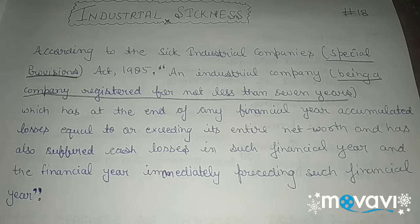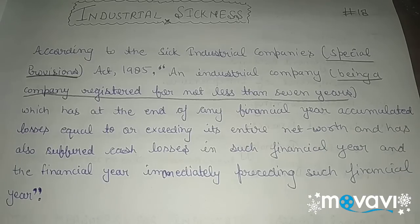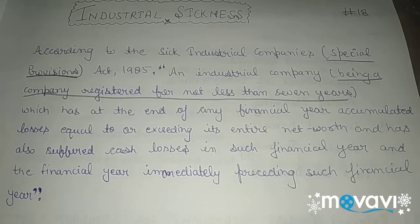Let's break it down and understand it. An industrial company which comes in the category of industrial sickness — that industry must have registered itself for more than seven years. It means its registration should not be less than seven years. That is the first term. Second: an industrial company which has at the end of any financial year accumulated losses equal to or exceeding its entire net worth — meaning if in any financial year the accumulated losses equal or exceed the net worth,